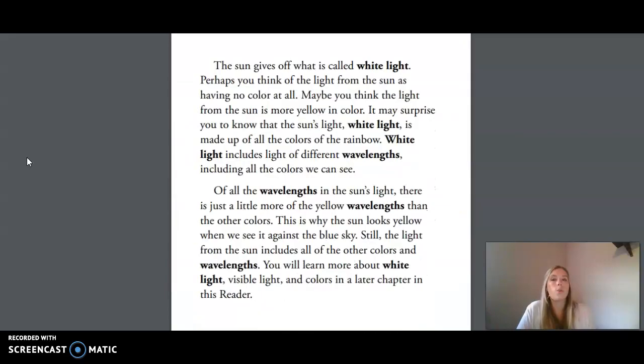The sun gives off what is called white light. Perhaps you think of the light from the sun as having no color at all. Maybe you think the light from the sun is more yellow in color. It may surprise you to know that the sun's light, white light, is made up of all the colors of the rainbow. White light includes light of different wavelengths, including all the colors we can see.